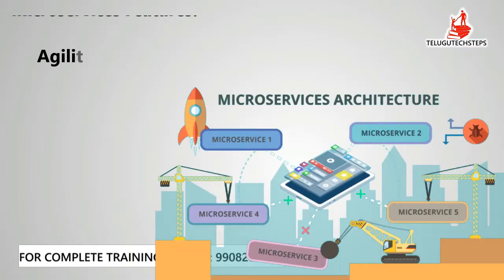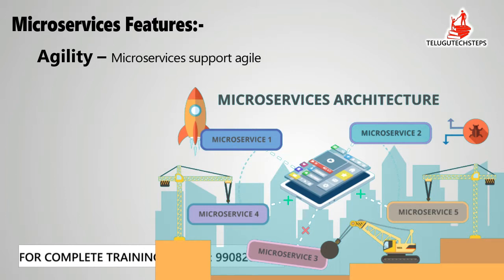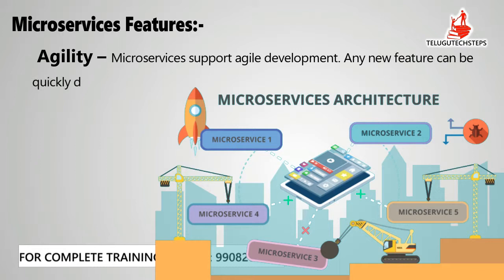Coming to agility: microservices support agile development. Any new feature can be quickly developed and delivered faster. At the same time, if a feature is no longer needed, it can be quickly removed from the application without impacting the rest. So these are the eight features of microservices architecture.